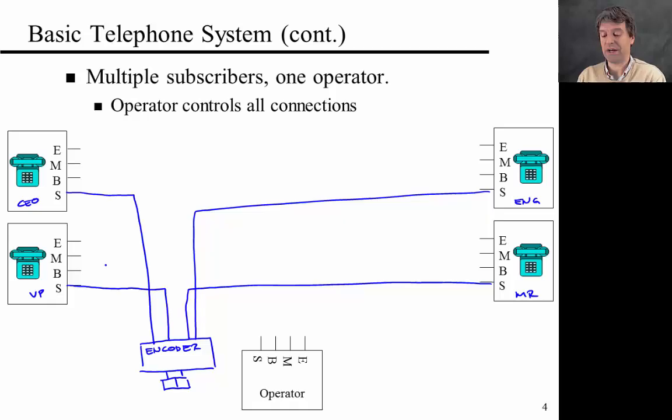And then the output of the encoder actually is a code that corresponds to the wire. So you can imagine that each of these people here has a code. So this might be 11, 10, 01, and 00. So if the CEO calls, the code that gets displayed down here is 11. So an encoder is a device that takes multiple wires in, and it just displays the code corresponding to the wire that is true. So the assumption here is that only one person calls at the same time.